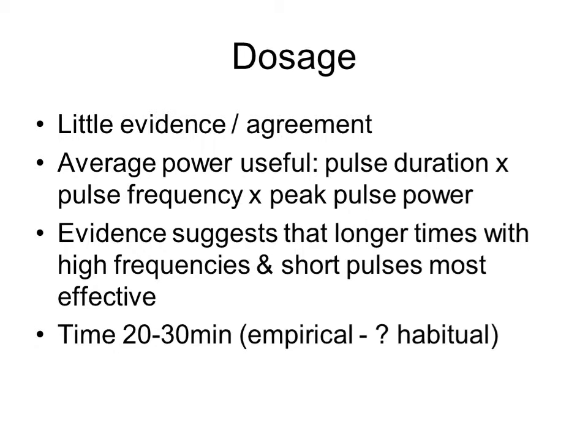In terms of dosage, there is little agreement or evidence in the literature. Having some idea of the average power seems to be useful, and this is a direct function of the duration of each pulse, normally fixed on most machines. The frequency of pulses and the peak pulse power or intensity are both normally adjustable. The evidence does seem to suggest that treatment for longer time periods using higher frequencies and short pulses might be more effective. The normal treatment time recommended is between 20 to 30 minutes, but there seems to be no clear rationale for this except that it fits well with the time that patients often have for a treatment session.